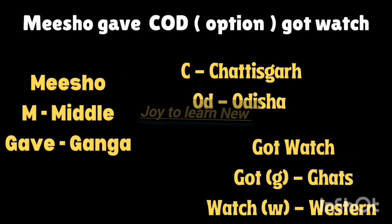The second shortcut is: 'Misho gave COD option and I got watch.' Here 'Misho' — M stands for middle, and G-A stands for Ganga, meaning middle of the Ganga plain. C-O-D: C represents Chhattisgarh, O-D represents Odisha. 'Got watch' — G represents ghats, W represents western — meaning Western Ghats. So the soil is found in Odisha, Chhattisgarh, middle Ganga plain, and Western Ghats.